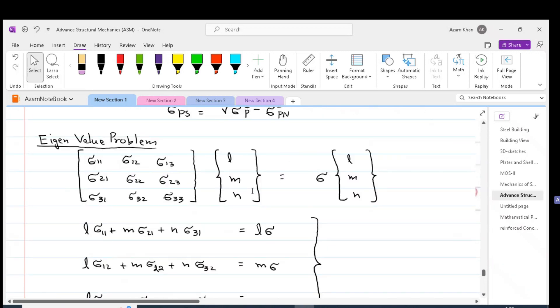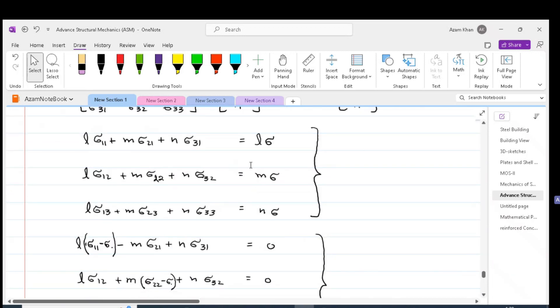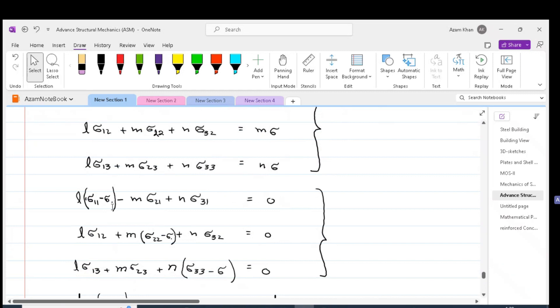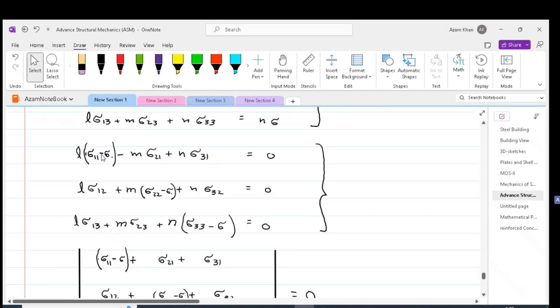Opening the brackets and solving will give us three equations. Bringing the right hand side to the left hand side and taking common will give us L times sigma_11 minus sigma minus M times sigma_21 plus N times sigma_31.